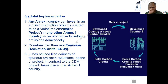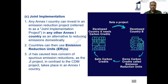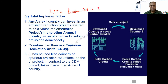In joint implementation, the majority of projects have happened in a special type of Annex 1 countries called EIT — Economies in Transition. This term refers primarily to CIS countries, the Commonwealth of Independent States, which are the former Soviet states.